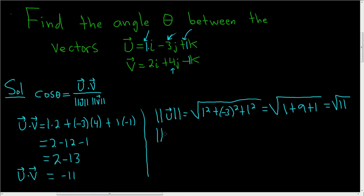Let's find the magnitude of v. It's equal to the square root, and again, you just square the components and add them all up. So 2 squared plus 4 squared plus negative 1 squared. This is equal to the square root of, let's see, 2 squared is 4, 4 squared is 16, and negative 1 squared is 1. So this is the square root of 21.